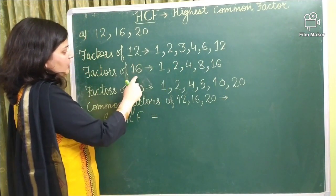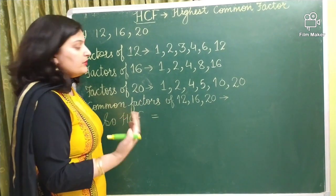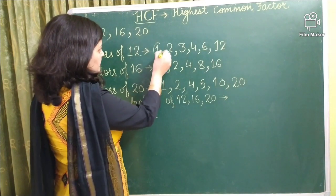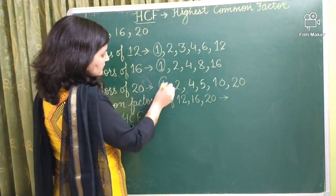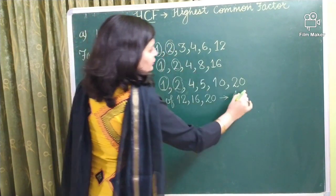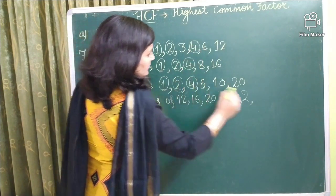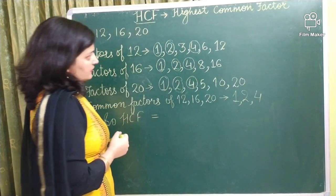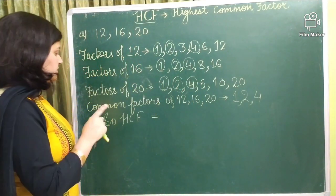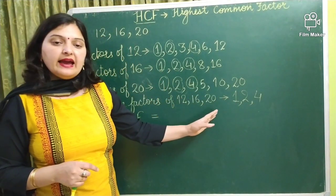And after that when you got all the factors of these 3 numbers, then you have to choose the common factors. So common mean which is present in all the 3 numbers. The first number which is present in all the 3 numbers is 1. Then we have 2. Then we have 4. Except 1, 2 and 4, no other number is common. So these are the common factors of 12, 16 and 20.